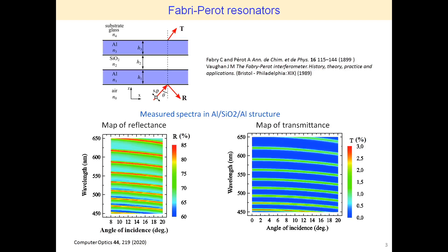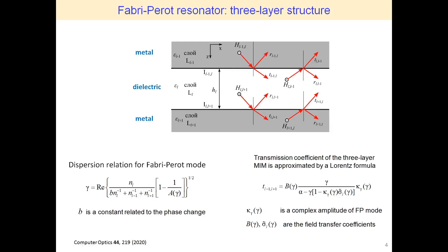The excitation of the Fabry-Perot modes by an incident wave results in the appearance of resonance line shapes in the reflection and transmission spectra. The position and shape of the resonances depend on the angle of incidence of the light and its wavelength, and can be estimated using rigorous electromagnetic theory with time-consuming data post-processing. Alternatively, the transmission spectra in Fabry-Perot resonators with non-absorbing mirrors can be approximated by the sum of Lorentzian functions.